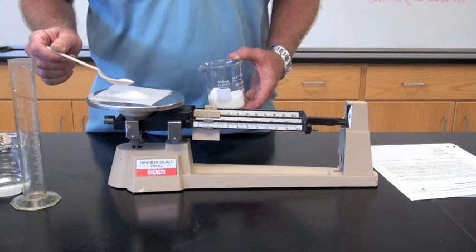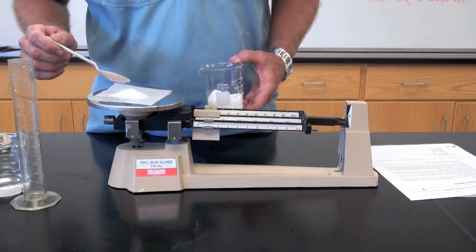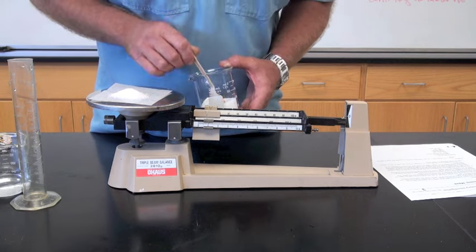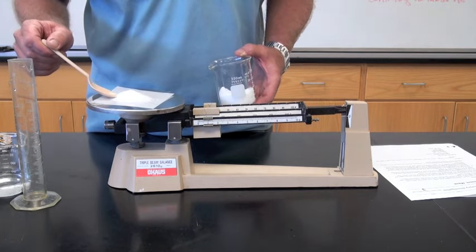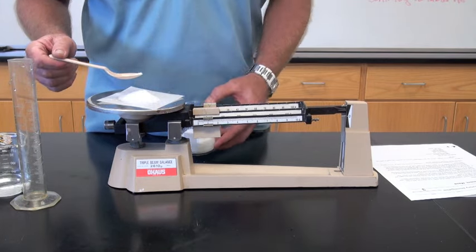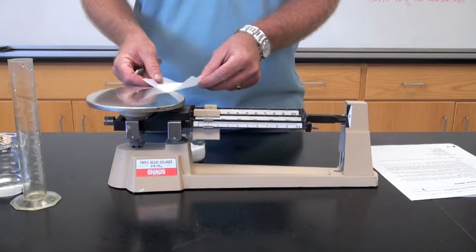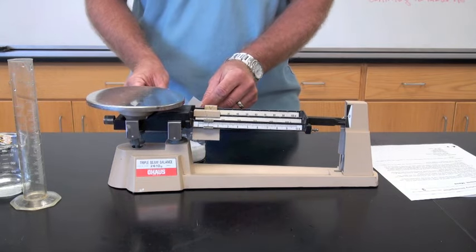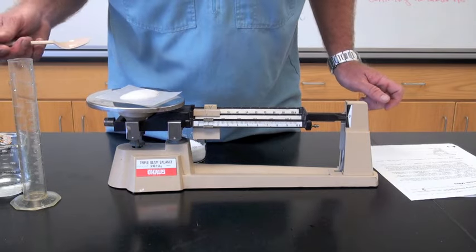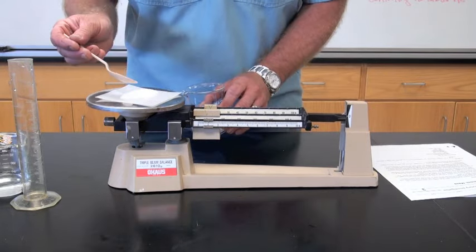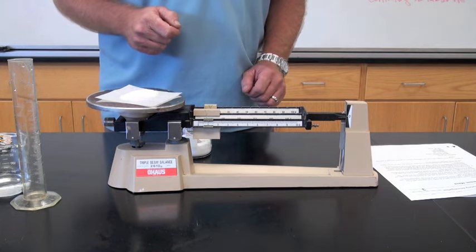Remember, you can always add more. Don't go too fast. Go nice and slow. Oops, I went too far. I have to start all over. A teeny bit more. Now I've measured out exactly 10 grams of my solid chemical.